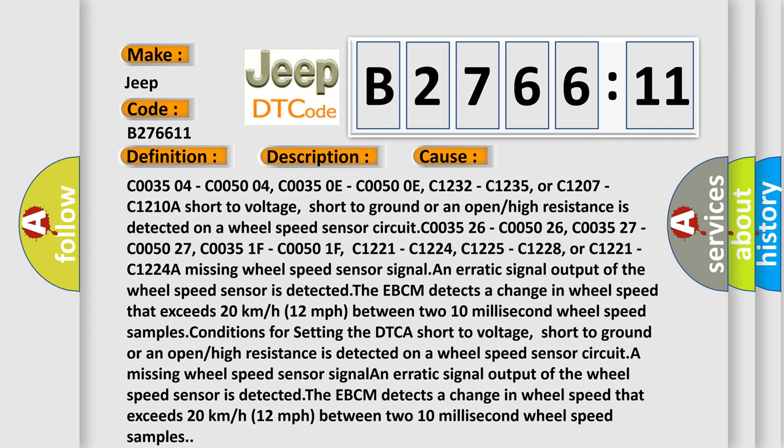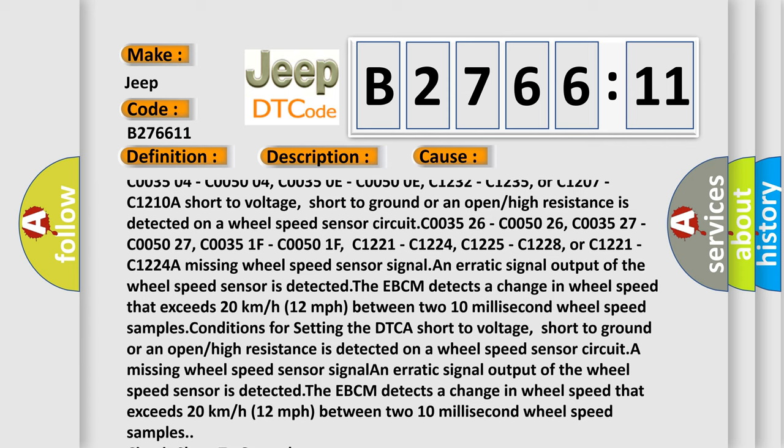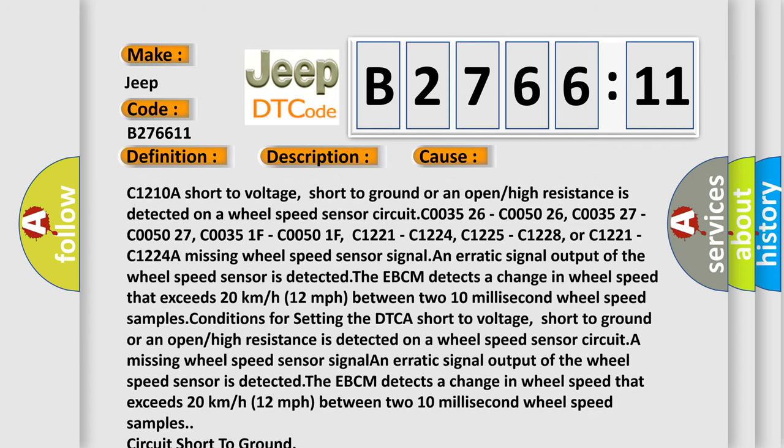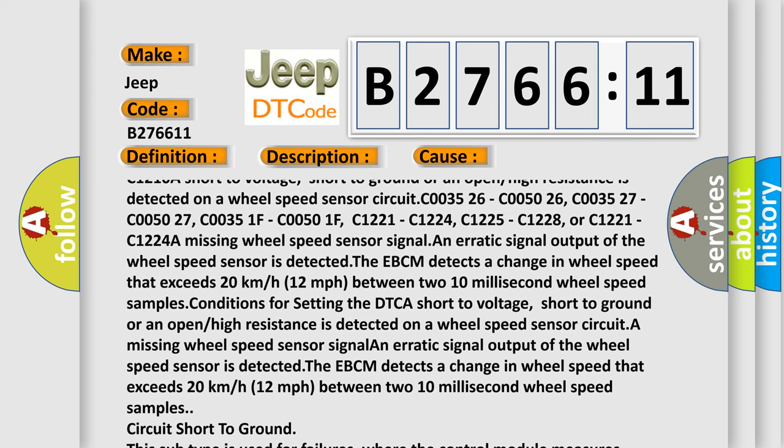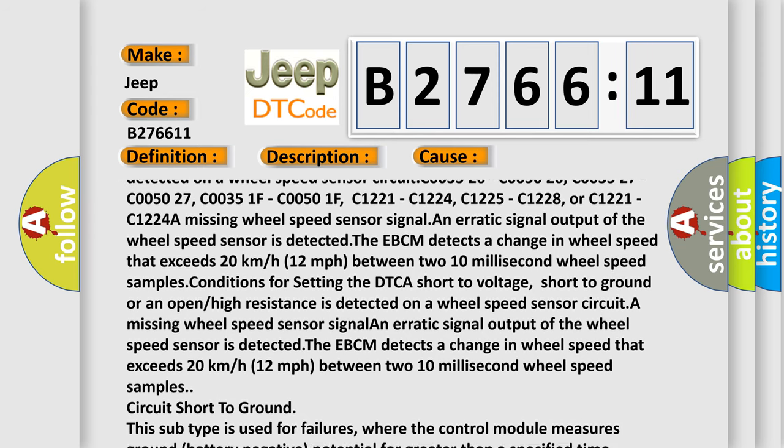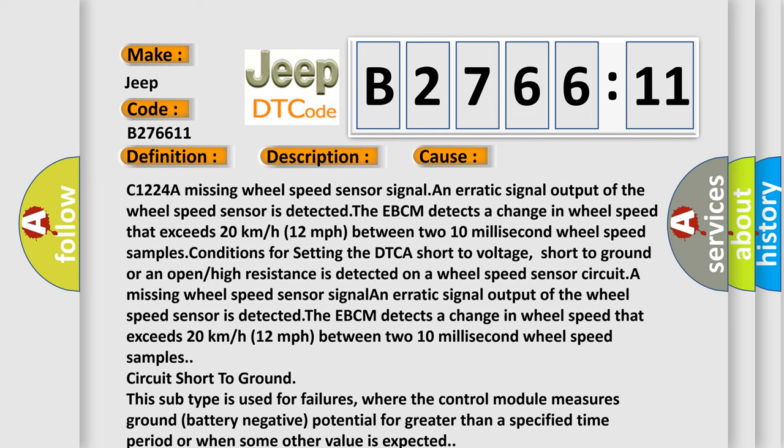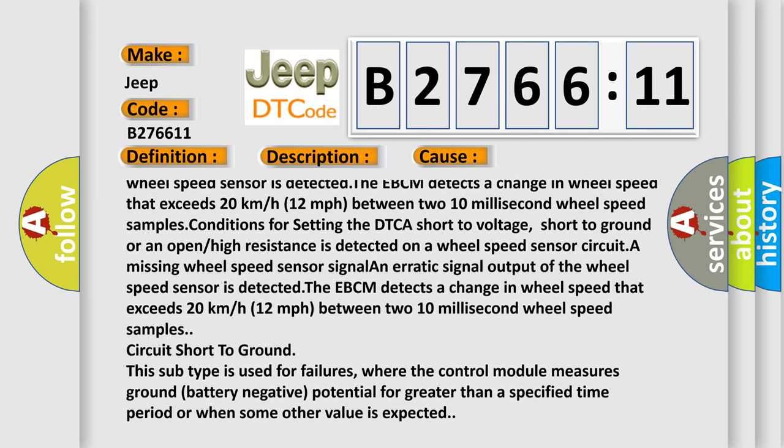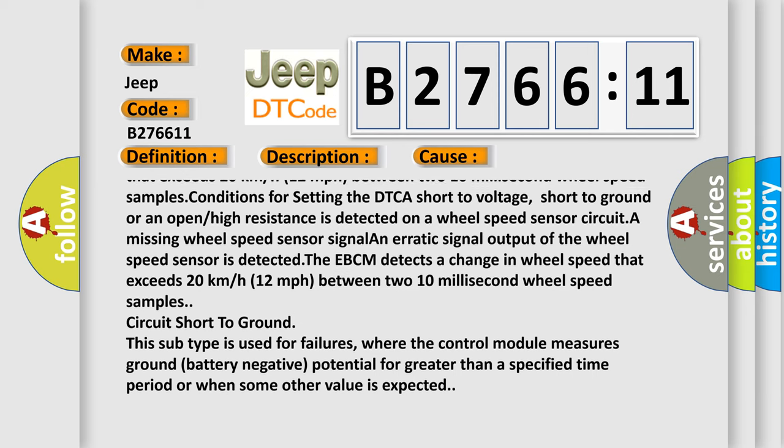C003504, C005004, C00350E, C00500E, C1232, C1235, or C1207, C12108. Short to voltage, short to ground, or an open or high resistance is detected on a wheel speed sensor circuit. Distinguished at C00300, C005026, C003527, C005027, C00351, C00501, C1221, C1224, C1225, C1228, or C1221, C1224. A missing wheel speed sensor signal and erratic signal output of the wheel speed sensor is detected.